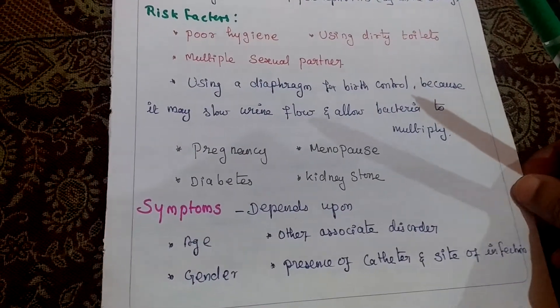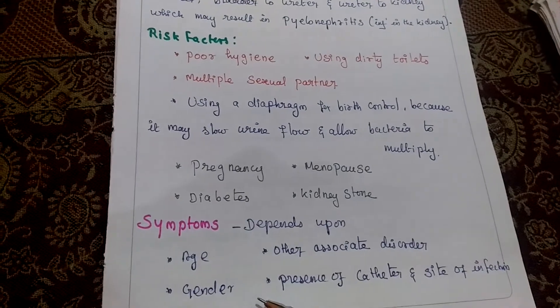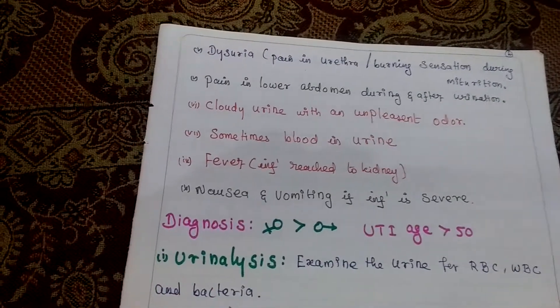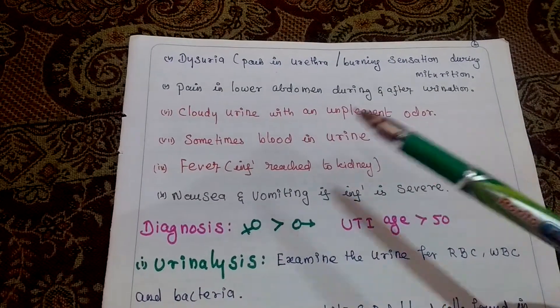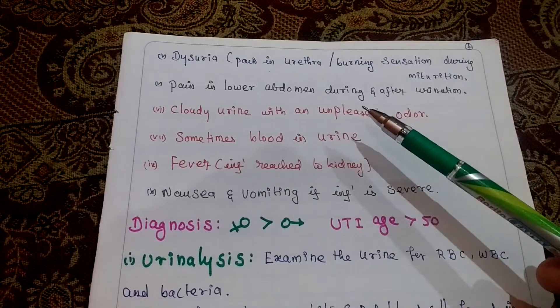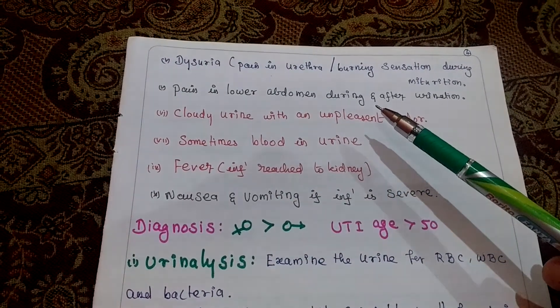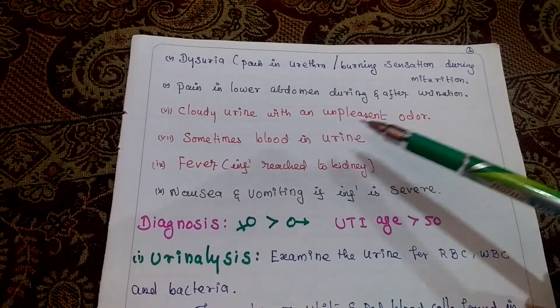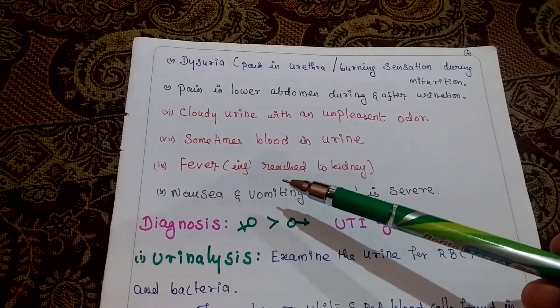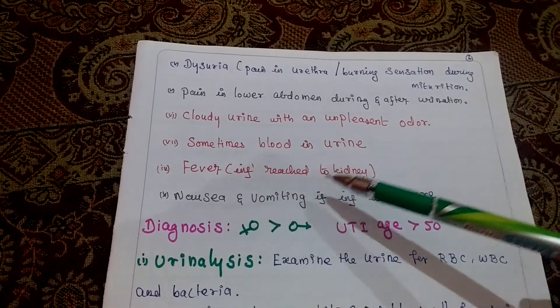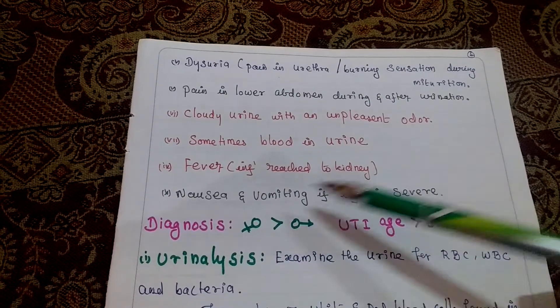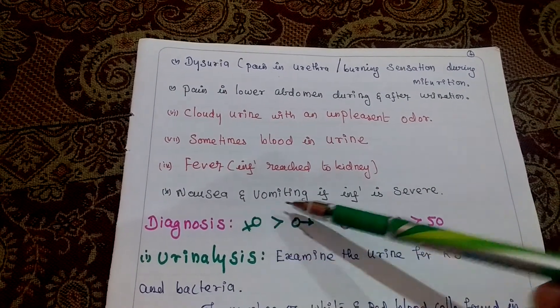Symptoms vary depending on age, gender, other associated disorders, presence of a catheter, and the site of infection. Common symptoms include dysuria, pain in the lower abdomen during or after urination, cloudy urine with an unpleasant odor, and sometimes blood in the urine. Fever occurs when the infection reaches the kidney. Severe infection may also cause nausea and vomiting.